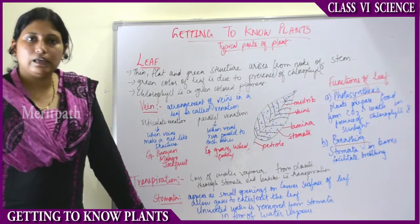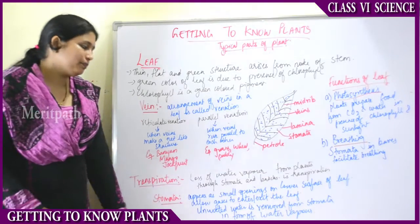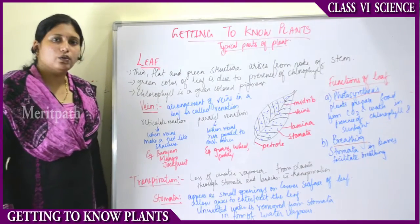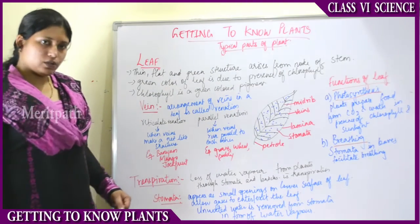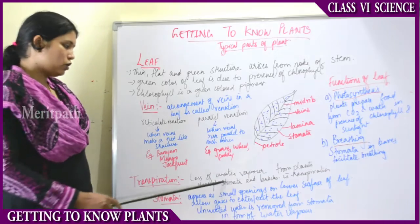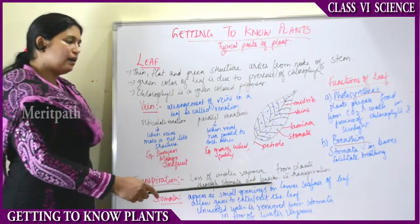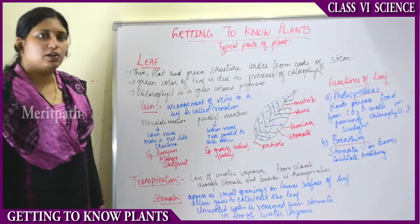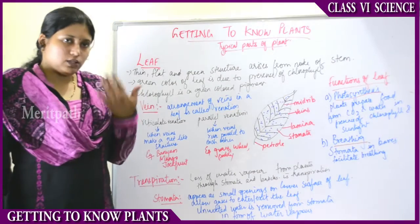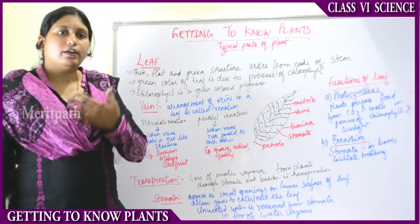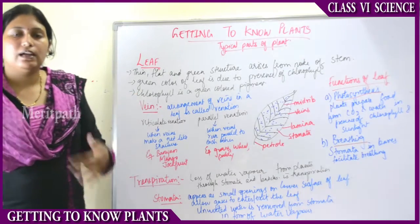Transpiration is a main process that plants carry out, and it is also part of the water cycle. Water vapor comes into the atmosphere through the transpiration process. Transpiration is the loss of water vapor from plants through the stomata and lenticles.